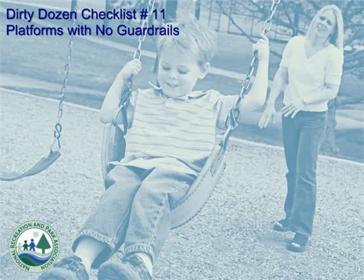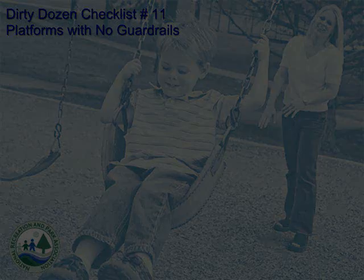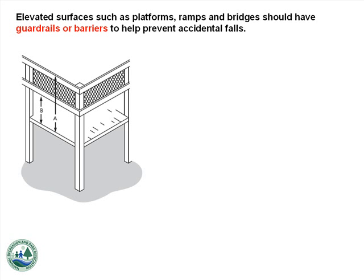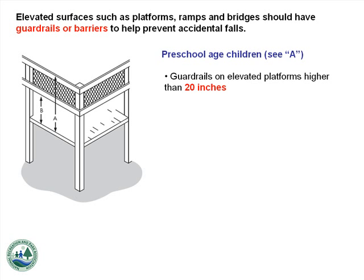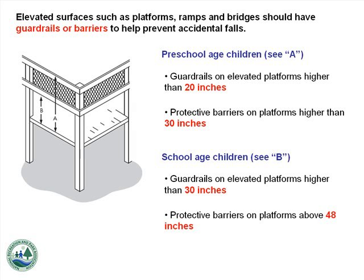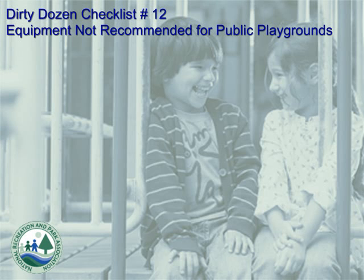Number 11: Platforms with No Guardrails. Elevated surfaces such as platforms, ramps, and bridges should have guardrails or barriers to help prevent accidental falls. Preschool-age children are more at risk for falls; equipment for this age group should have guardrails on elevated platforms higher than 20 inches and protective barriers on platforms higher than 30 inches. Equipment intended for school-age children should have guardrails on elevated platforms higher than 30 inches and protective barriers on platforms above 48 inches.